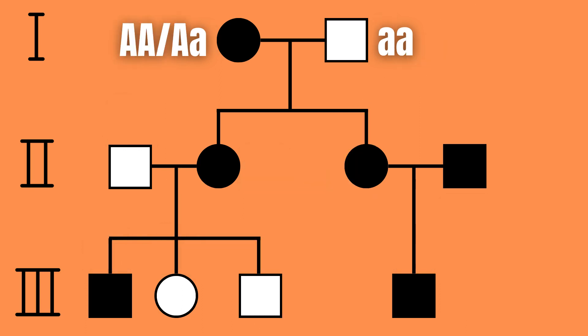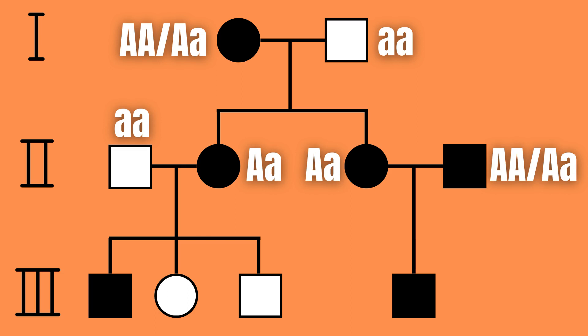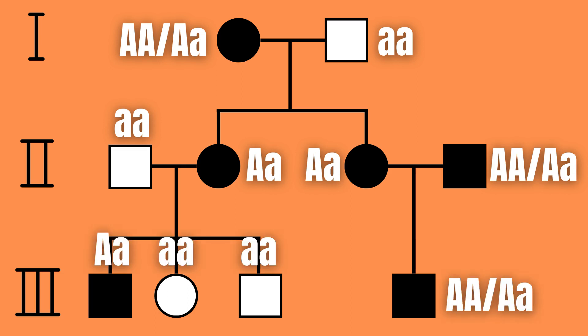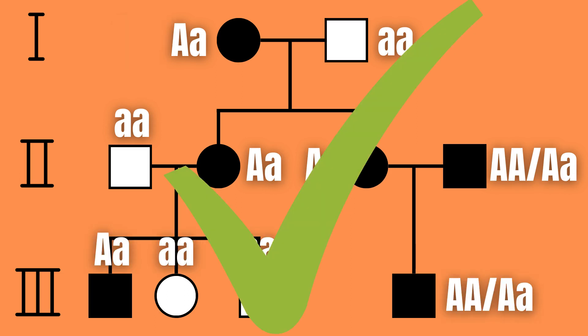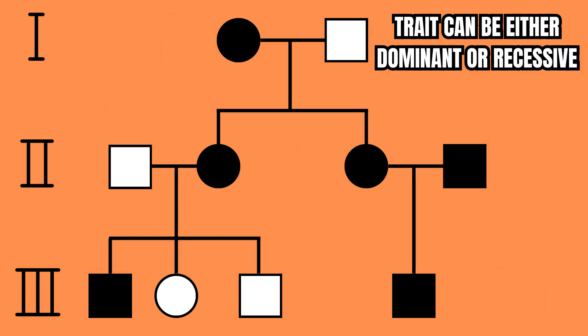However, if the trait was instead dominant, we would end up with mostly the same situation but in reverse. In other words, in this particular case, both scenarios work out, meaning that we do not have enough information to determine if this is a recessive trait or a dominant trait.